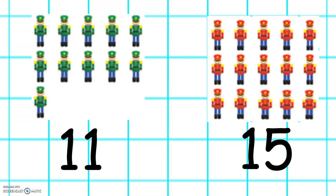Which group has the most? Have a think. Well done. The red group has the most because 15 is a bigger number. The green group has the least because 11 is a smaller number.